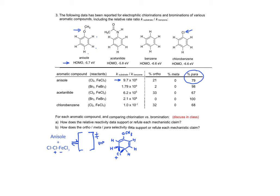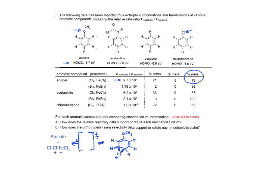Turning to the next page of the worksheet, we can apply the same analysis to aromatic reactants that react with a slower rate relative to benzene and remarkably give the meta isomer.